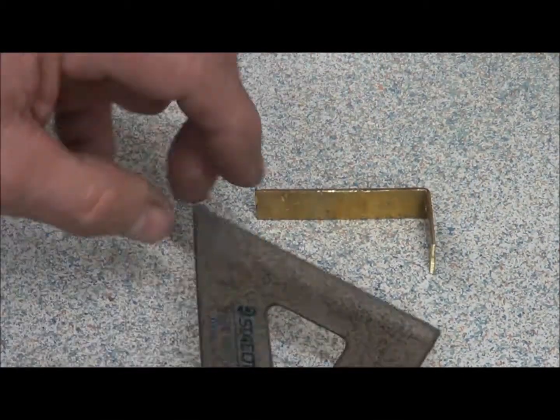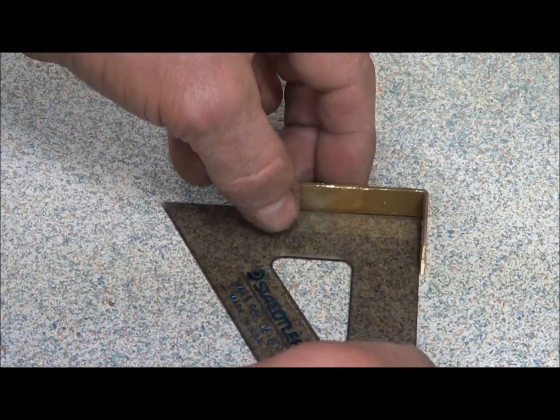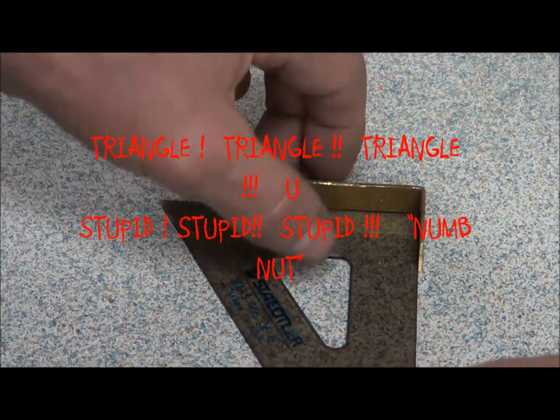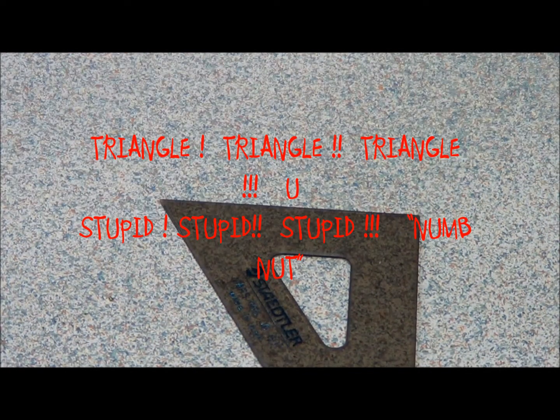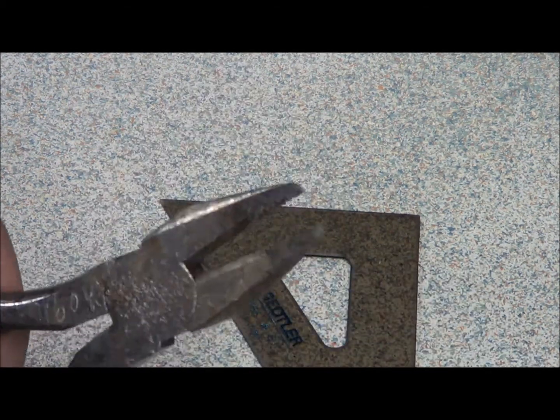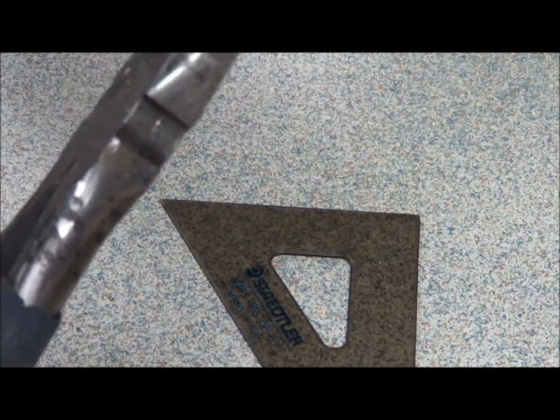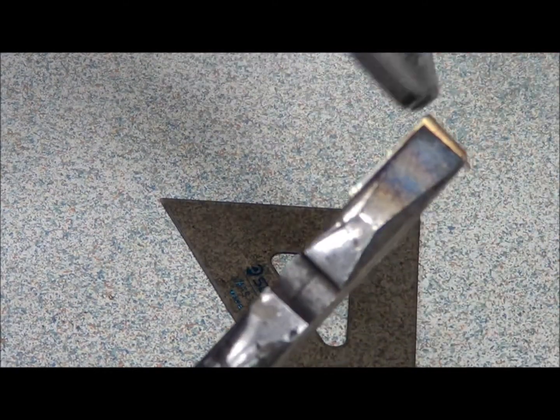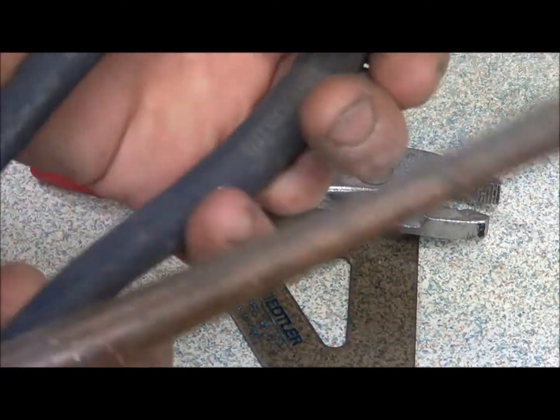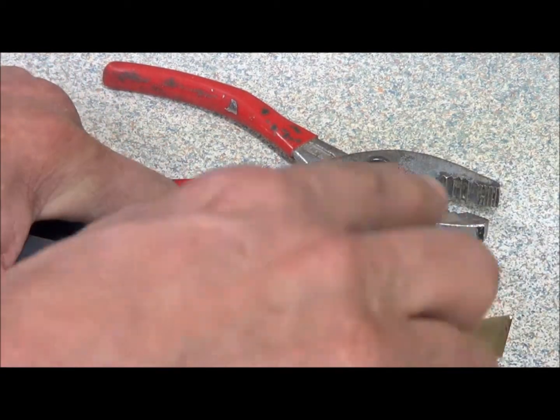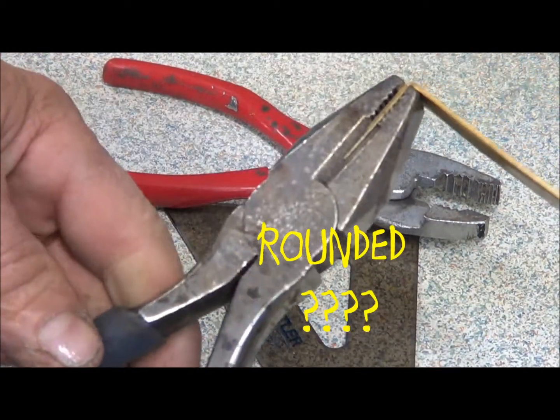Now you got yourself a nice little 90 degree bend. Then what you can do is take your square, put that up in there. Sometimes they over-bend depending on the vise you're using. You can use two pairs of pliers. What I'm using here are lineman's pliers - they're flat. You can grip it one way, use your other pliers, bend it over. Grip this good and tight, and you can get a nice square corner. If it's a little bit rounded, that's okay.